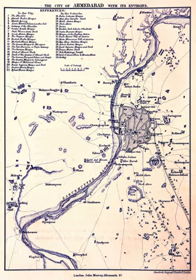1942 – Quit India movement; Ahmedabad municipality superseded; historic textile strike. 1946 – Second communal riot; death of Vasantrao and Rajabali in riots; municipality reinstated. 1947 – Bus transport service under municipal control; Independence Day celebrated; tricolor flag on Bhadra Fort after 130 years. 1948 – Immersion of Mahatma Gandhi's ashes in Sabarmati; preparations for electric grid scheme and expansion of power house; famine conditions in Ahmedabad district. 1949 – Amitabad station of All India Radio started; Gujarat Chamber of Commerce established.